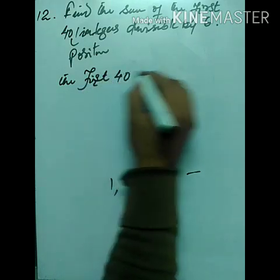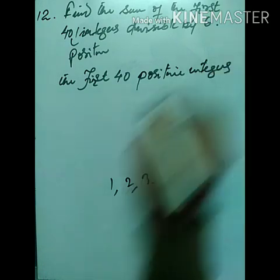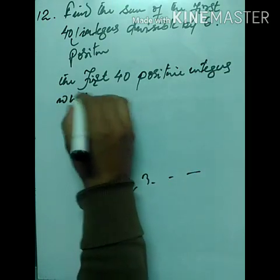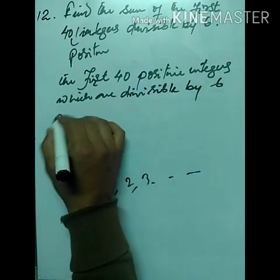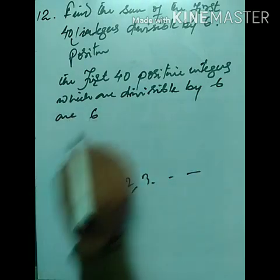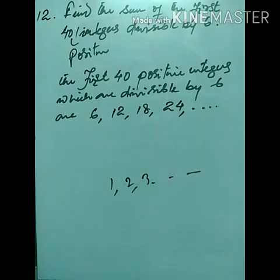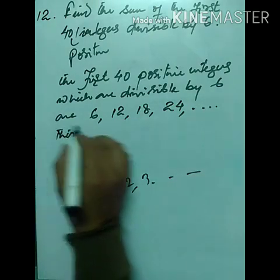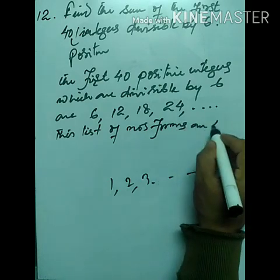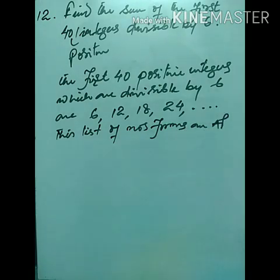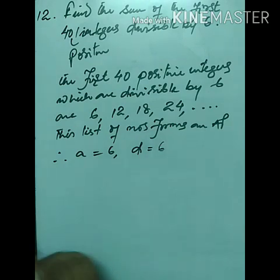The first 40 positive integers divisible by 6 are: 6, 12, 18, 24, and so on. This list of numbers forms an AP. Therefore first term a = 6 and common difference d = 6.